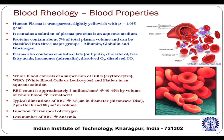Whole blood is plasma plus the blood cells. Blood cells include red blood cells (erythrocytes), white blood cells (leukocytes), and platelets in an aqueous solution. The red blood cell count is approximately 5 million per millimeter cube, which is about 40 to 45 percent by volume of the whole blood. The hematocrit H, expressed as volume percentage, is about 40 to 45 percent but varies from one individual to another and from one diseased condition to another.